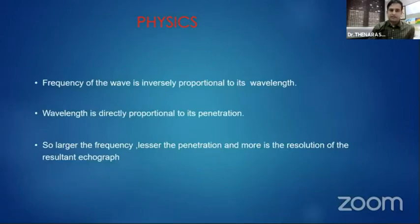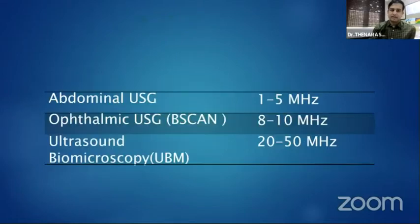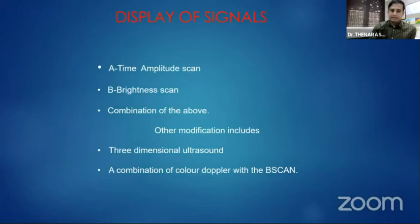The frequency of wave is inversely proportional to its wavelength, whereas wavelength is directly proportional to its penetration. Hence, larger is the frequency, lesser is the penetration, and more is the resolution of resultant echographs. These are the different frequencies used in different ultrasound probes. We have time-amplitude A-scan, brightness B-scan, combination of the above, and in addition, three-dimensional ultrasound and combination of color Doppler with B-scan.